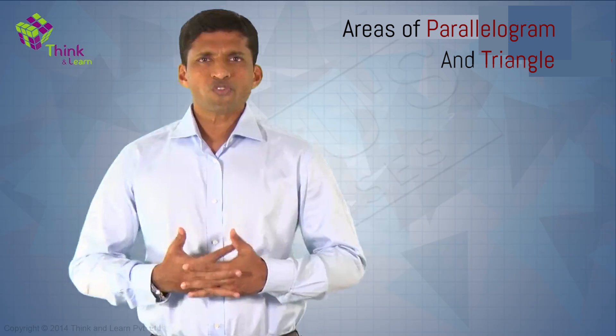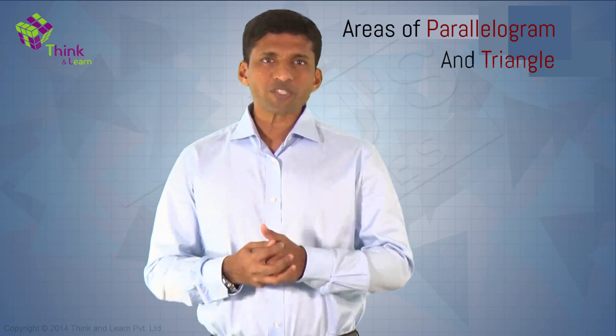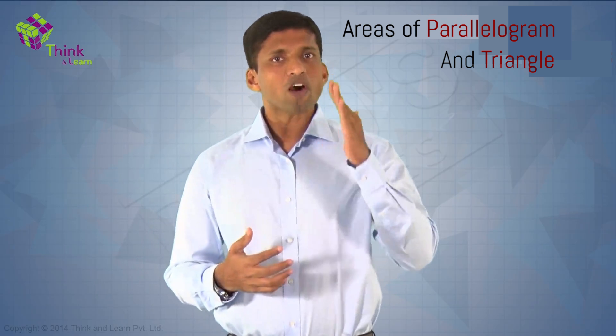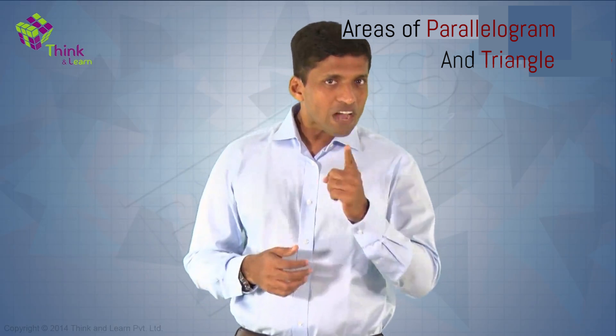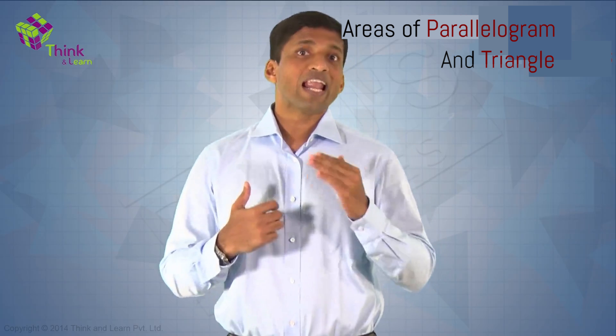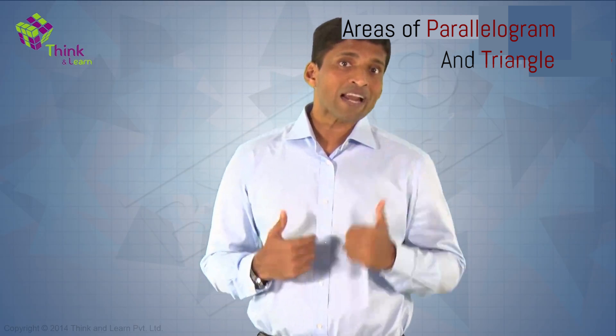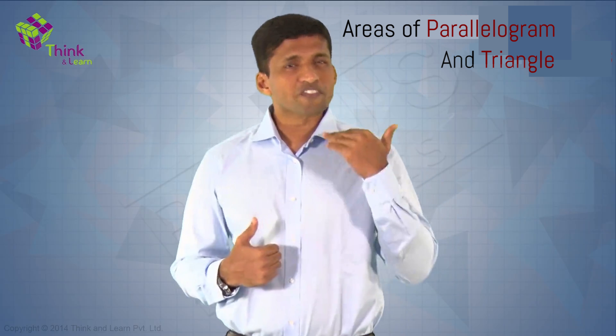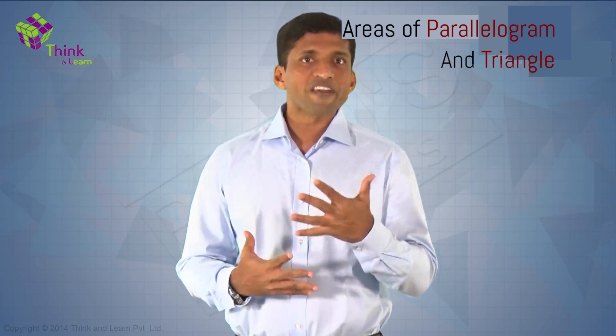Just to summarize what we have discussed: two figures are said to be on the same base and between the same parallels if they have a common base or side, and the vertices or vertex opposite to the common base of each figure lie on a line parallel to the base. This is something which we have clearly understood using diagrams, and I am sure you will be able to identify such diagrams going forward.